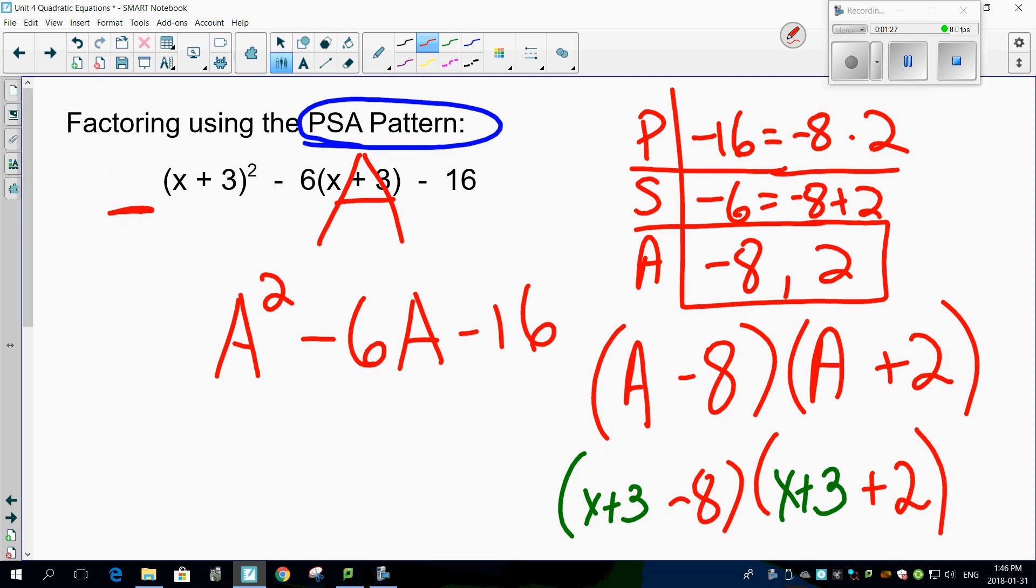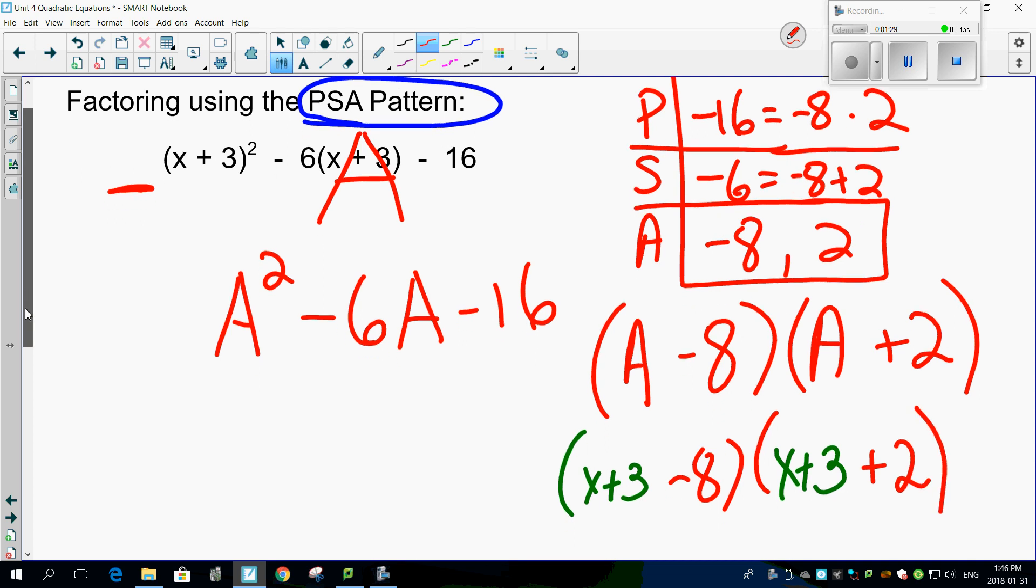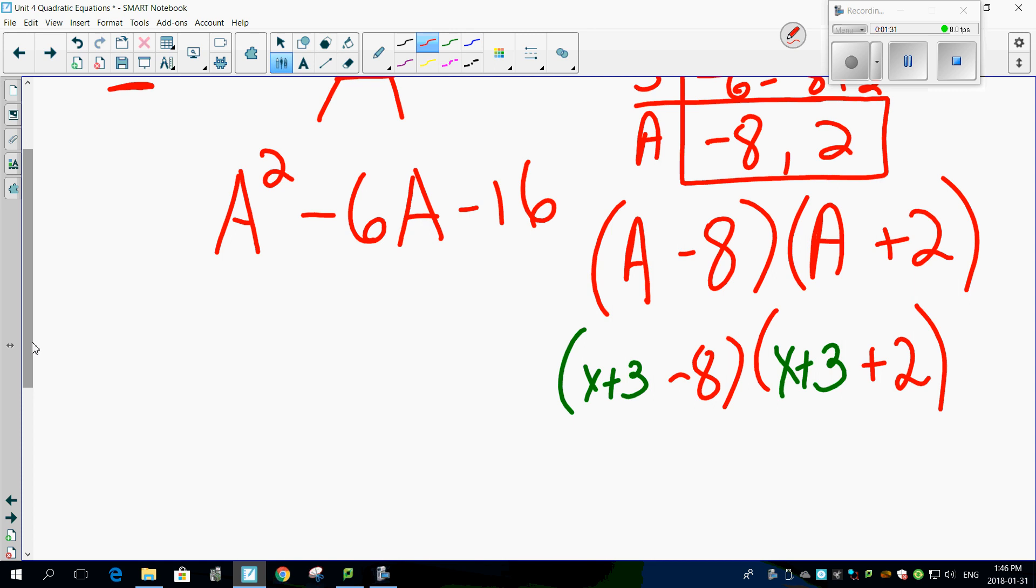All you got to do now is combine like terms, and you're finished. It's that straightforward. Look. Plus 3 and minus 8, X minus 5. Plus 3 and plus 2, X plus 5. Done. That simple.